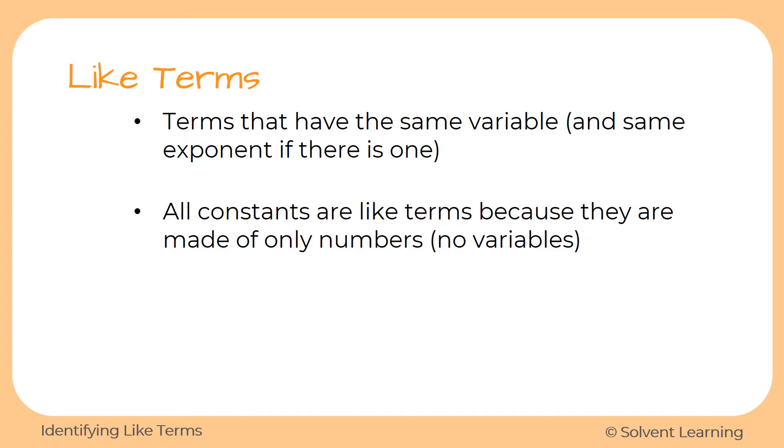All constants are considered like terms because they are made of only numbers. So whenever you see two terms that are just numbers, and remember if it's just a number we call them constants, then they are considered to be like because they are made of just numbers, no variables.